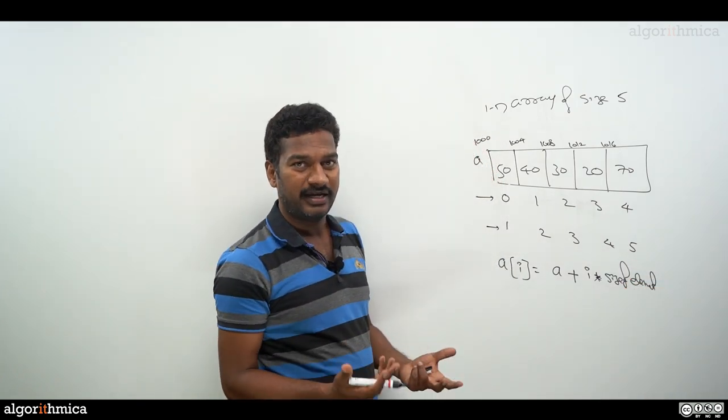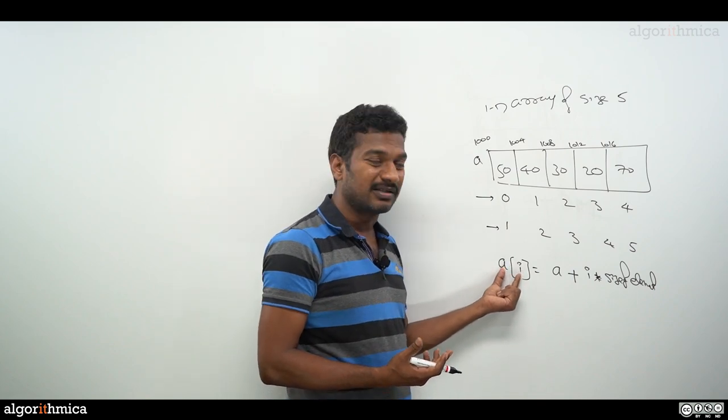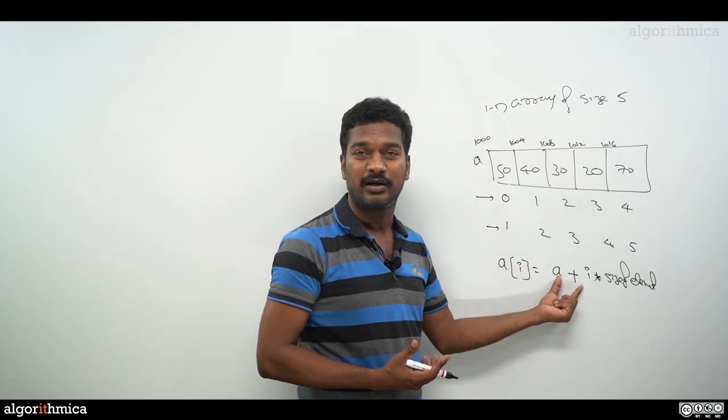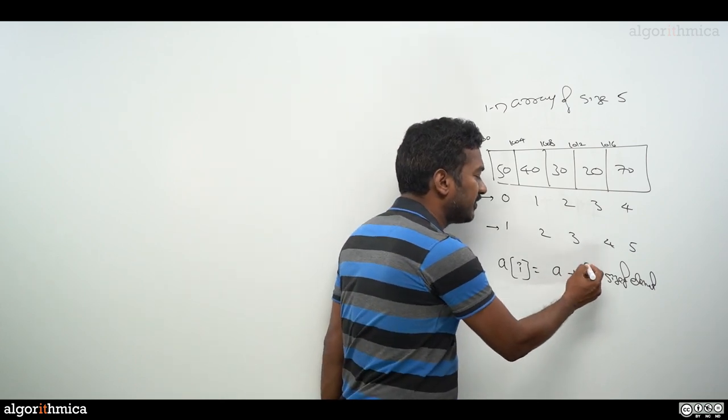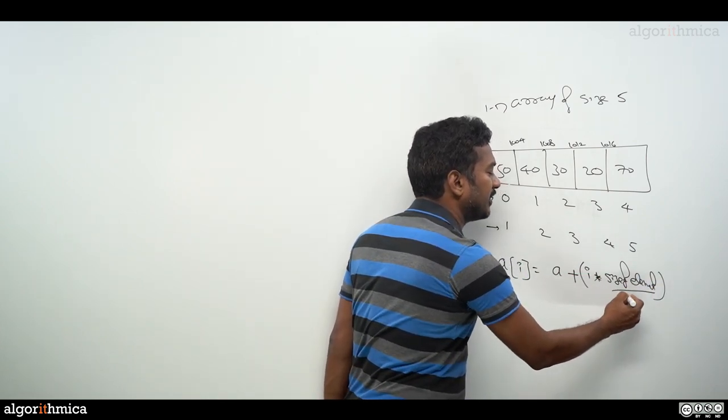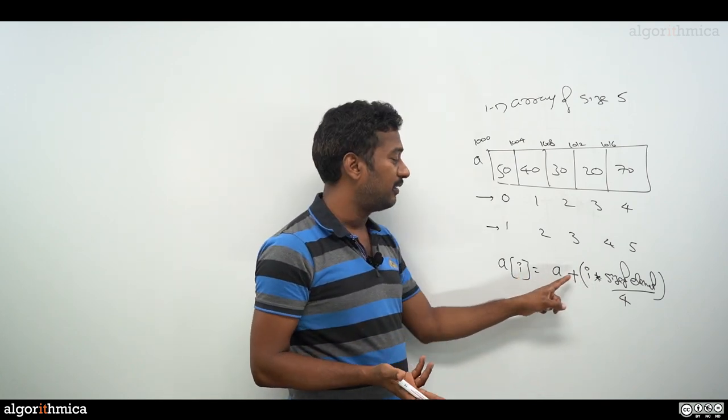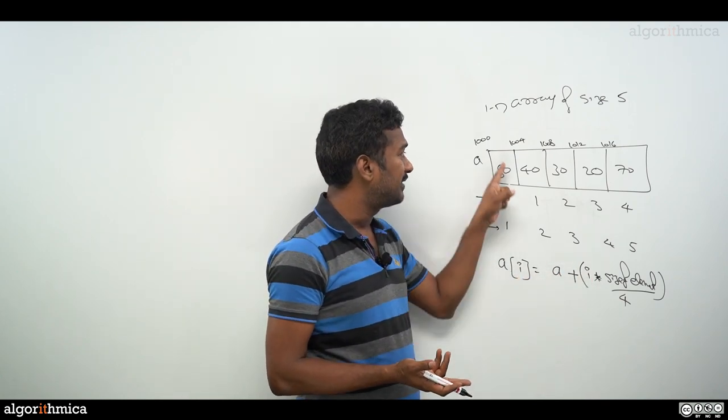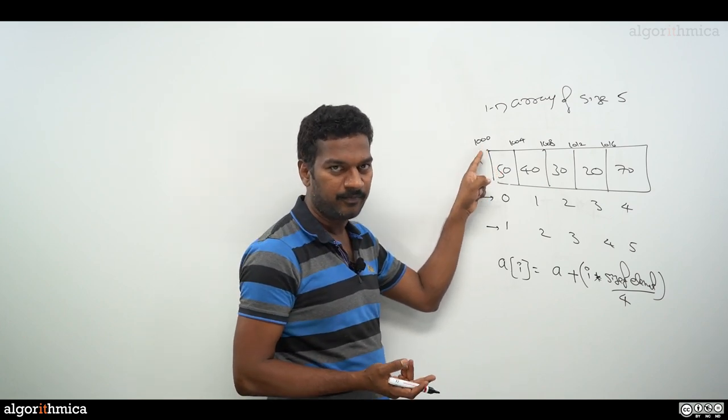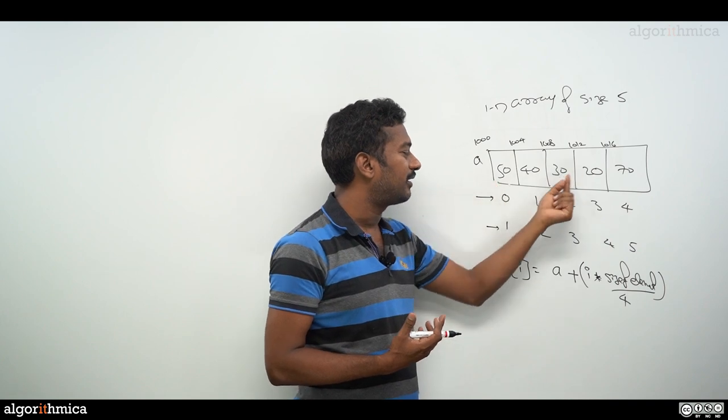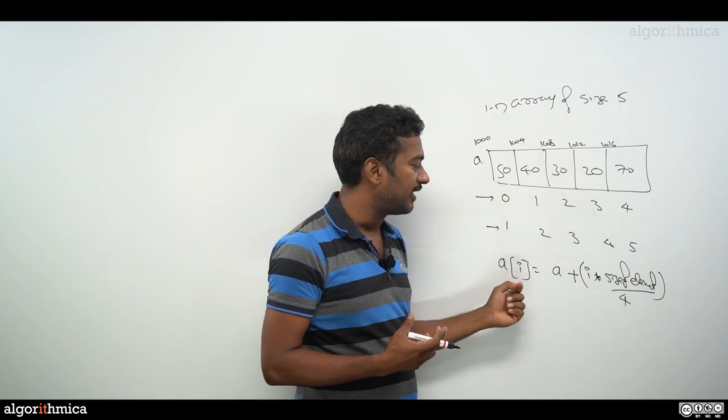This is normally the way the compiler converts this simple expression into what they call internal format. If you see this, the size of element we're assuming is 4 bytes. i is our index element. The base address normally will be 1000 if I use index one. Let me show you how to really get the exact addresses.